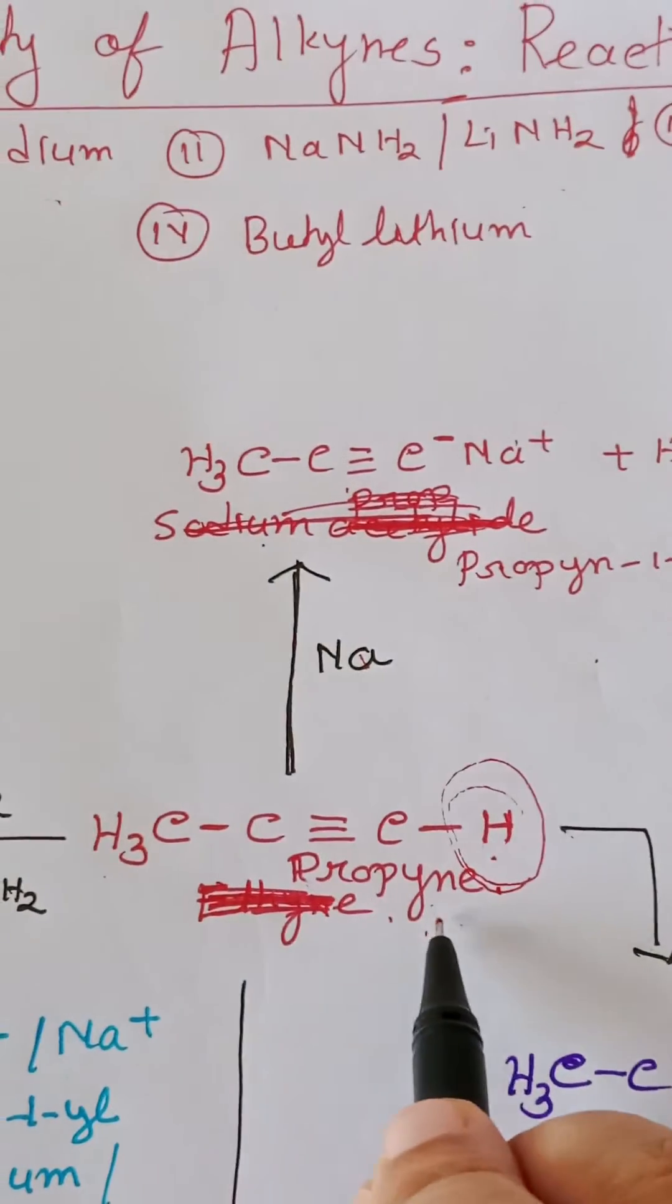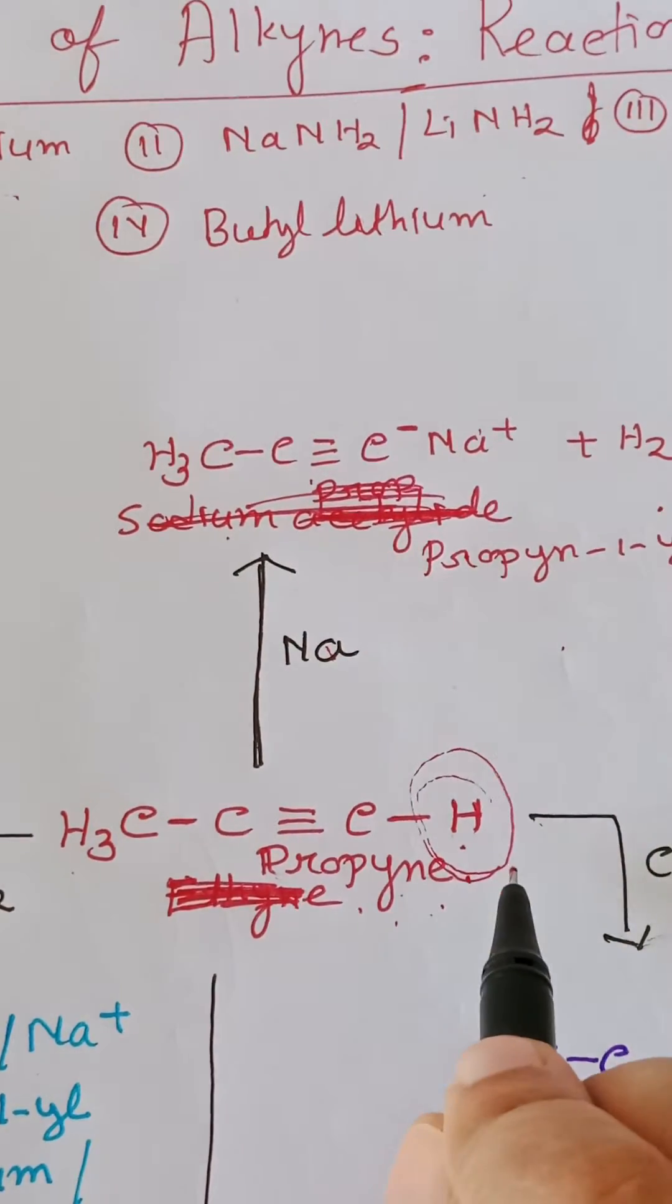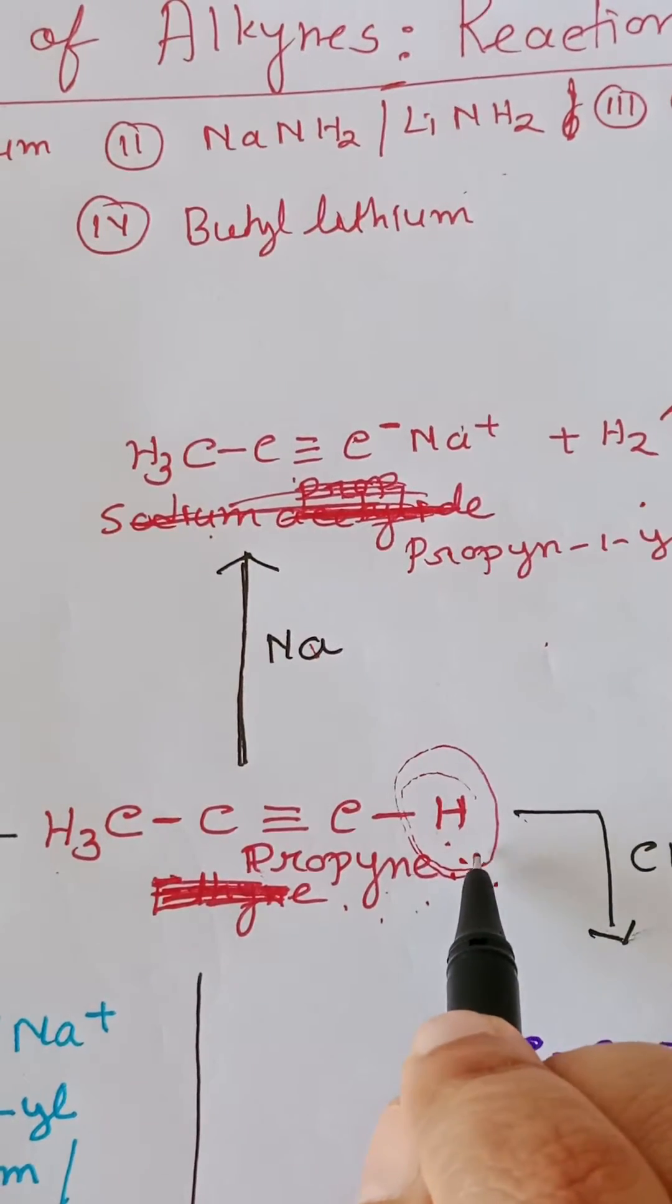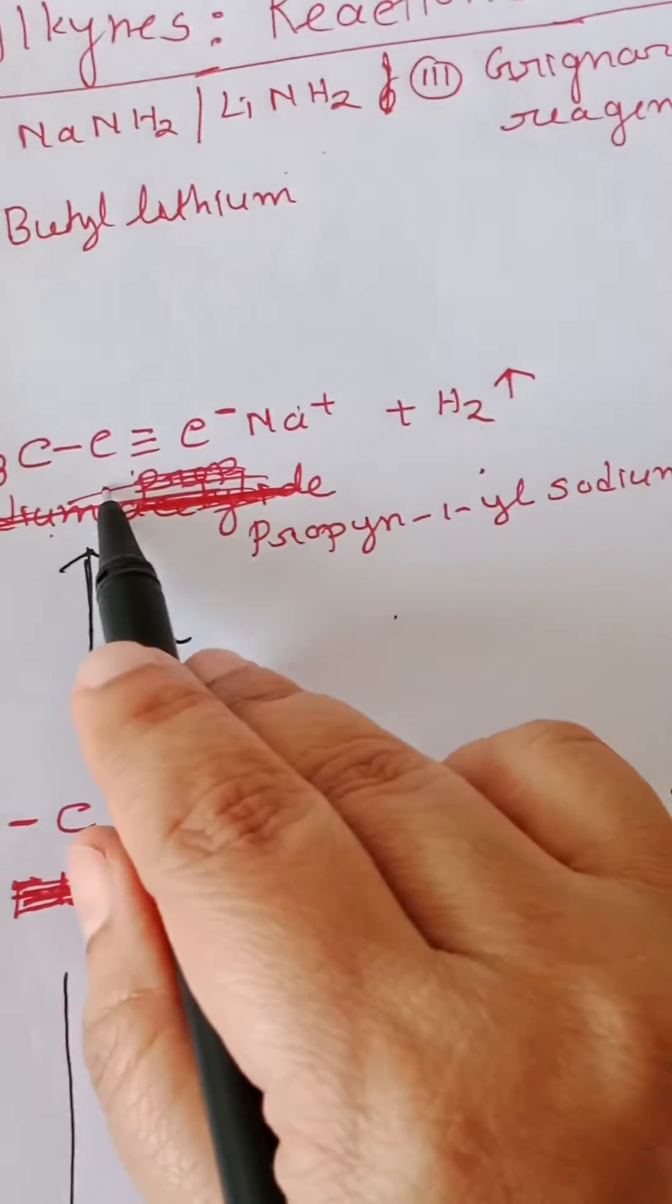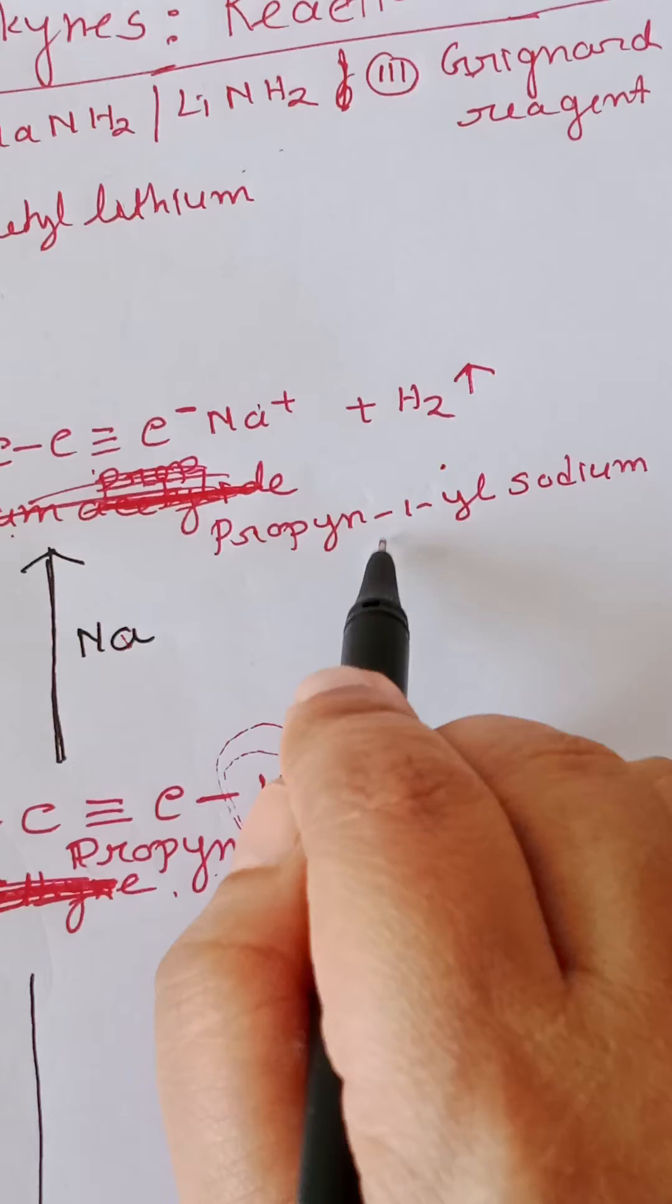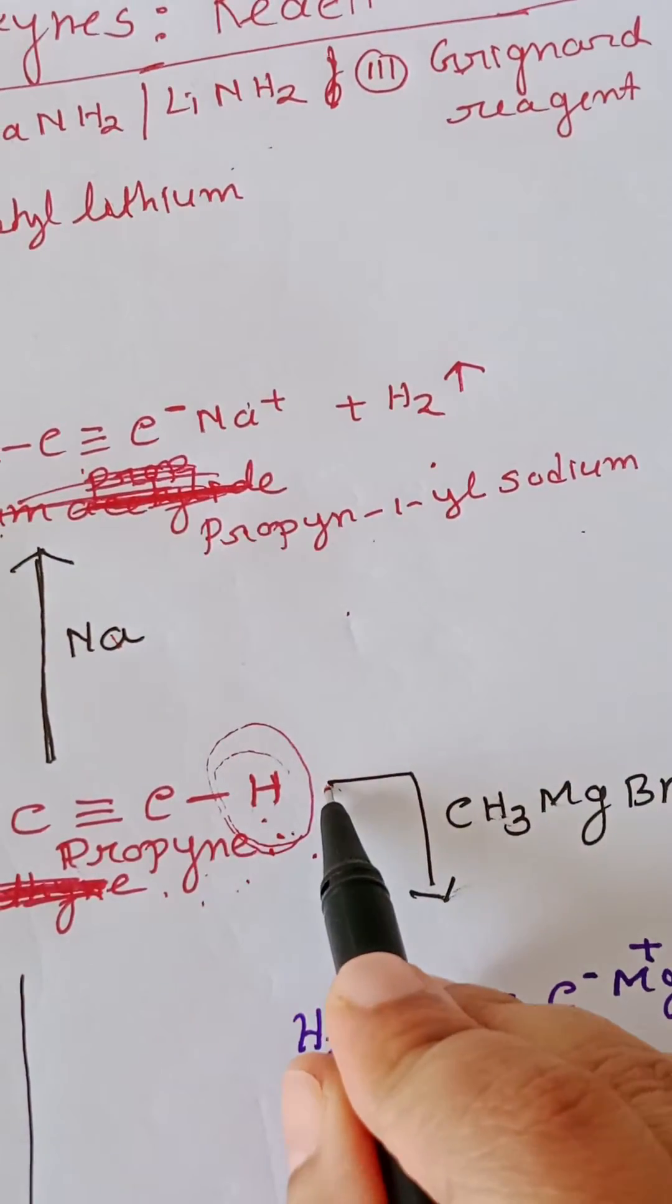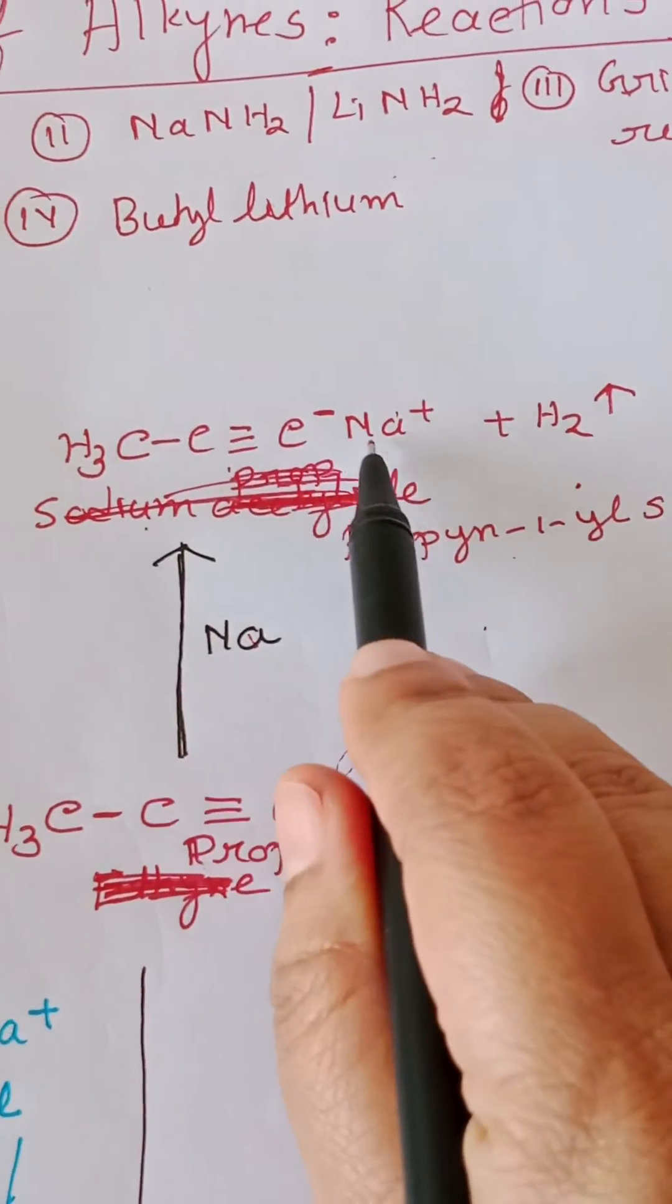Here I have taken propyne, it has one terminal hydrogen. This hydrogen is acidic in nature, so in presence of sodium it forms propyne vinyl sodium and hydrogen gas. This hydrogen gets replaced with sodium and we get an ionic compound.